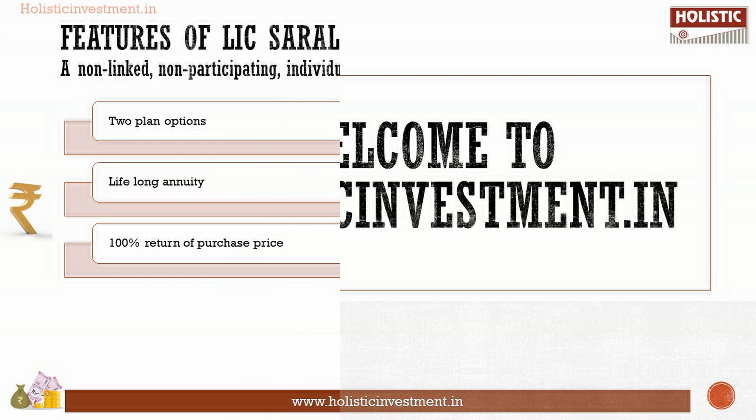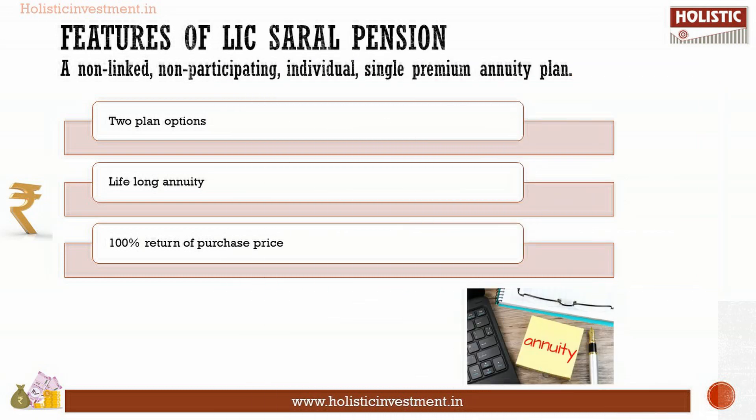LIC's RL Pension plan is a non-linked, non-participating, single premium, individual, immediate annuity plan. The main features are: there are two annuity plan options, it offers lifelong annuity, and there is a 100% return of purchase price.